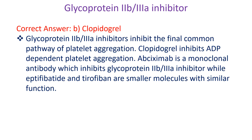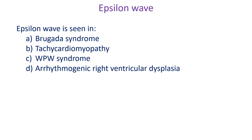Glycoprotein 2b3a inhibitors inhibit the final common pathway of platelet aggregation. Clopidogrel inhibits ADP-dependent platelet aggregation. Abciximab is a monoclonal antibody which inhibits the glycoprotein 2b3a receptor, while eptifibatide and tirofiban are smaller molecules with similar function.